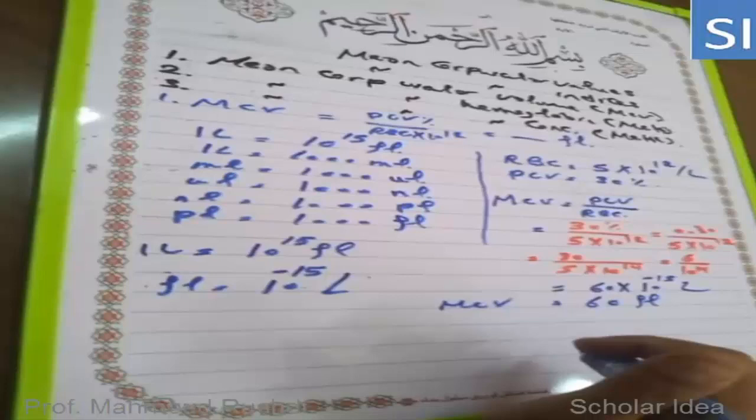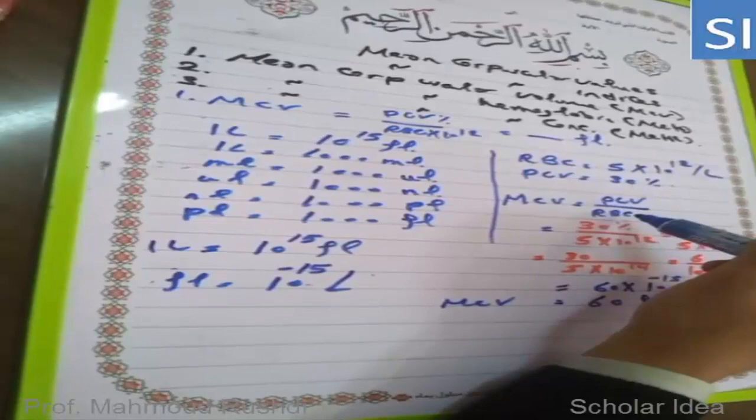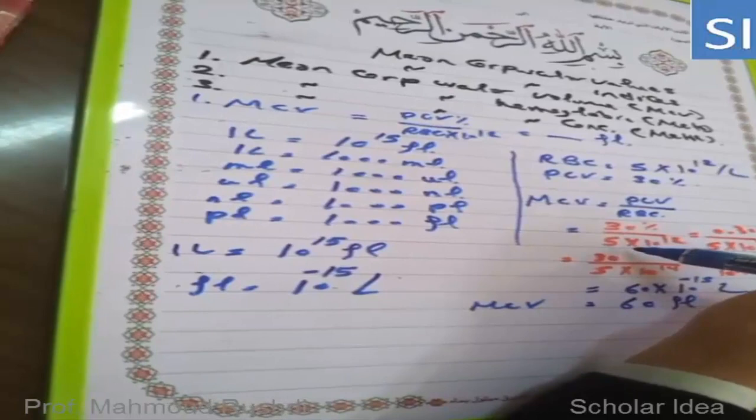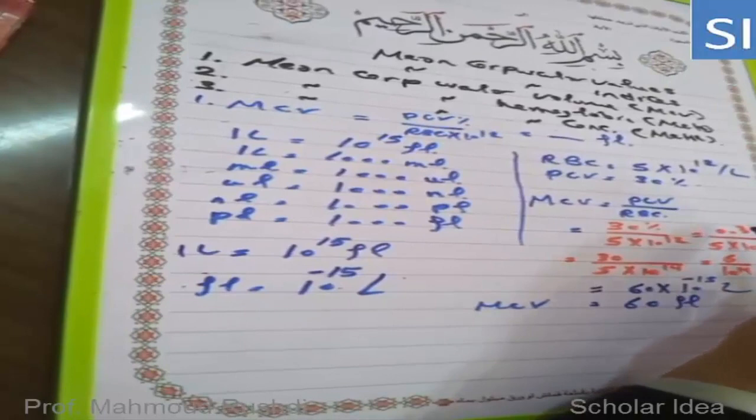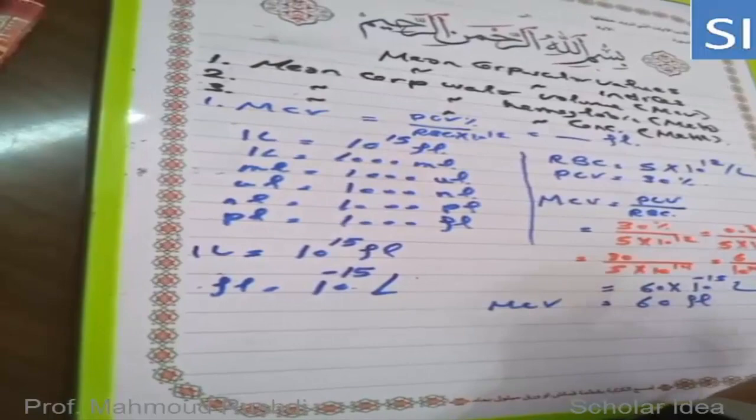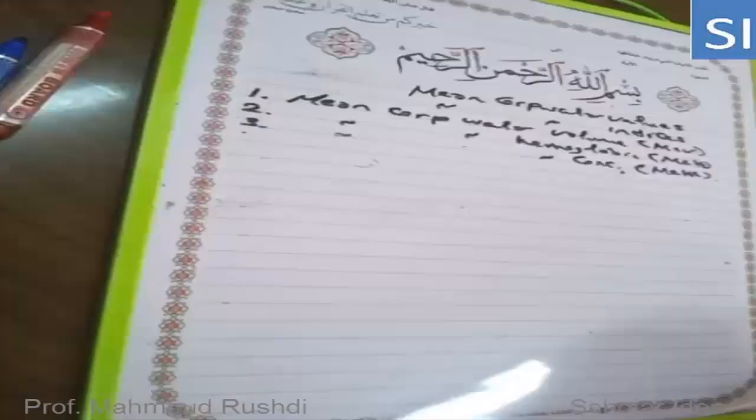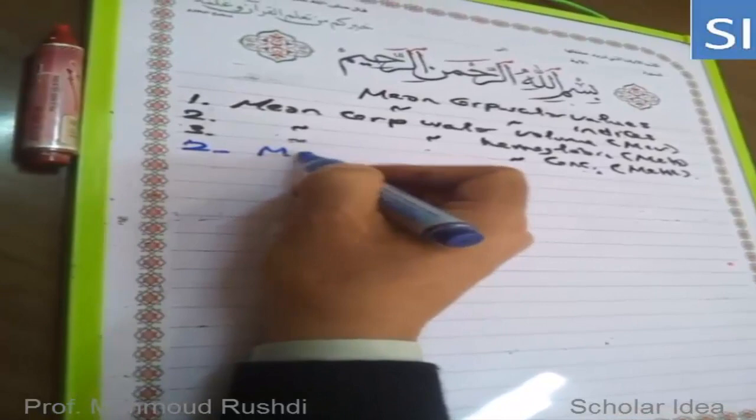Converting: since one femtoliter equals 10⁻¹⁵ liters, 6 × 10⁻¹⁴ liters equals 60 femtoliters. So in this example, MCV equals 60 fL. The PCV is 30 percent and the red blood cell count is 5 × 10¹² per liter.